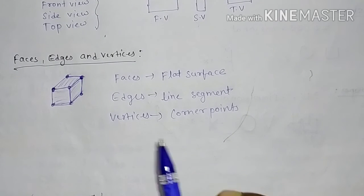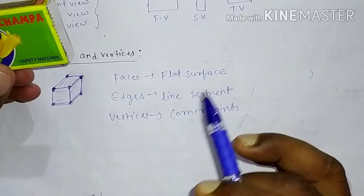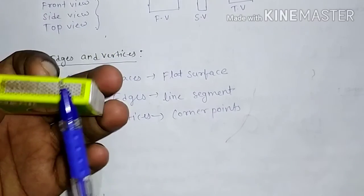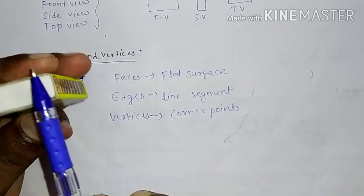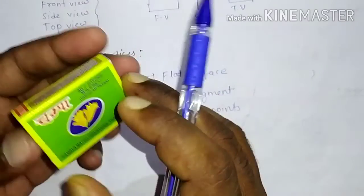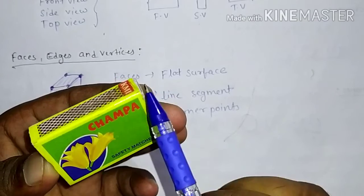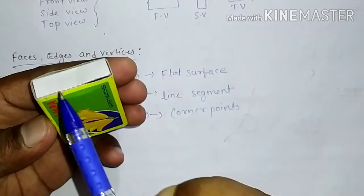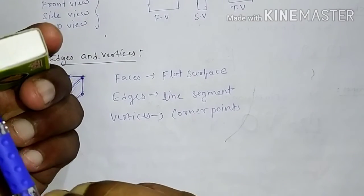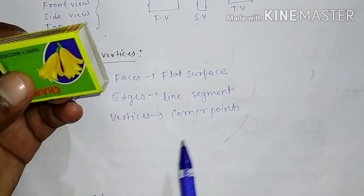These are the explanations of faces, edges, and vertices, understood through this live example. Faces: 1 face, 2 face, 3 face, 4 face, 5 face, 6 face — there are 6 faces. Edges — line segments: 1, 2, 3, 4, 5, 6, 7, 8, 9, 10, 11, 12 — so there are 12 edges.